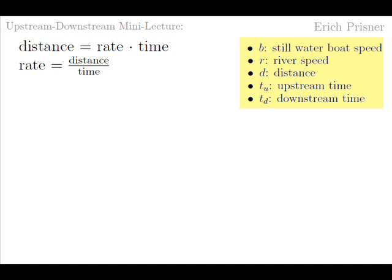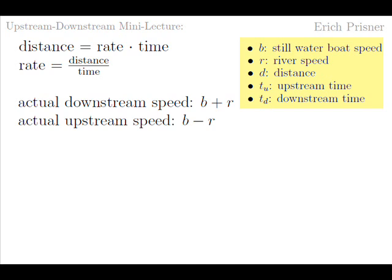It is now important to understand that the rate of the boat as observed from the banks is not equal to the speed of the boat in still water. Actually the speeds for moving upstream and moving downstream are different. Upstream is hard and slow and downstream is fast and easy. When the boat goes downstream the stream pushes. The stream speed adds to the boat speed in still water. So the actual speed as observed from the banks is b plus r. For the upstream part the river speed has to be subtracted. So the actual speed for this part is b minus r.